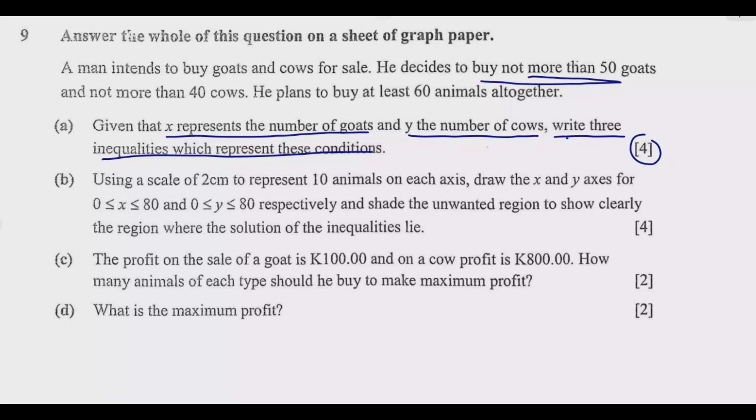So what are goats? Goats represent x. So this tells me that the first inequality is that x is less or equal to 50, meaning 50 is greater than x. So x cannot exceed 50. 50 is the maximum it can go. That's the first inequality.